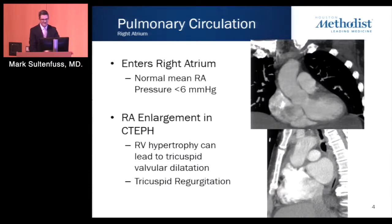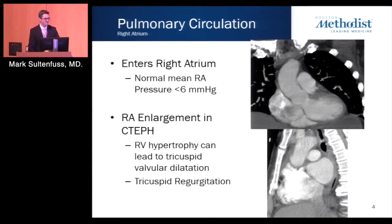Other imaging findings include reflux of contrast into the IVC or hepatic veins in the workup of patients with pulmonary arterial hypertension, as well as dilated azygous or venous systems.